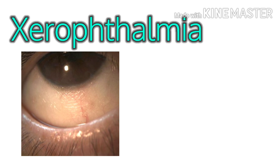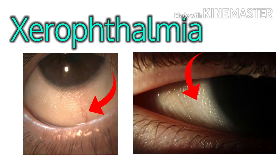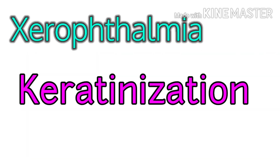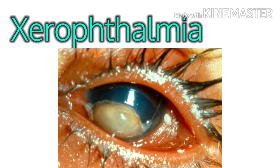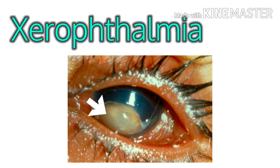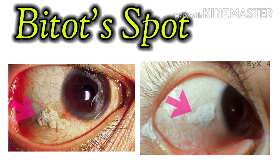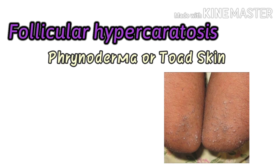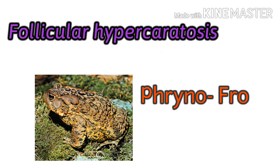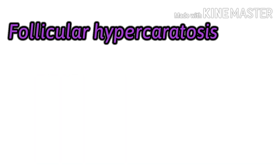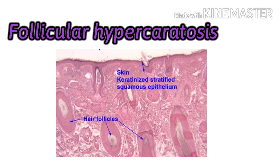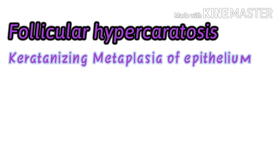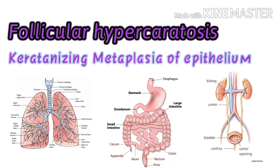Xerophthalmia: the conjunctiva becomes dry, thick, and wrinkled. There is loss of normal transparency of the conjunctiva due to keratinization. Keratinization of the corneal epithelium gives a glazed and lustrous appearance to the cornea. Bitot's spots: increased thickness of the conjunctiva in certain areas causes grayish-white triangular plaques firmly adherent to the conjunctiva. Follicular hyperkeratosis, also known as phrynoderma or toad skin — 'phryne' means frog and 'derma' means skin — results from hyperkeratinization of the epithelium lining the follicles. Keratinizing metaplasia of the epithelium of the respiratory, gastrointestinal, and genitourinary tracts has also been observed.